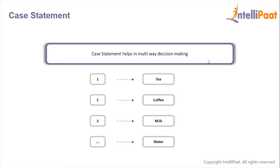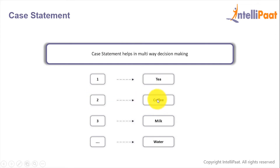Let's say there are 10 buttons starting from 1 to 10. If the person selects 1 then he wants tea. If he selects 2 then he wants coffee. Similarly, if he selects 3 then he wants milk.